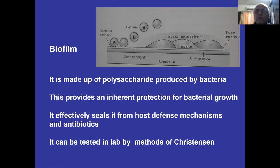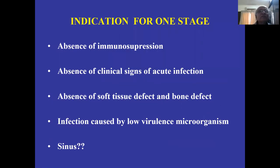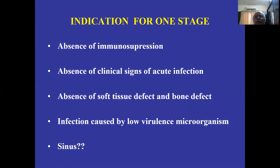Biofilm is produced by polysaccharides by bacteria and provides inner protection. The bacteria are always underneath, and when the opportunity comes, the biofilm opens up and they come out. Indications for one stage: absence of immunocompromised patient — rheumatoid, highly diabetic, uncontrolled diabetes, renal transplant, high-dose cortisone patients are not good candidates. Also: absence of clinical signs of acute infection, absence of soft-tissue and bone defects, infection caused by a low-virulence organism. Most people are not doing single stage with a sinus tract.